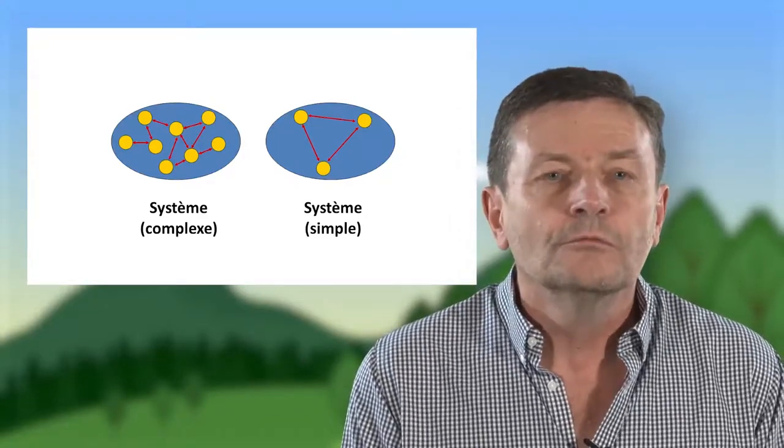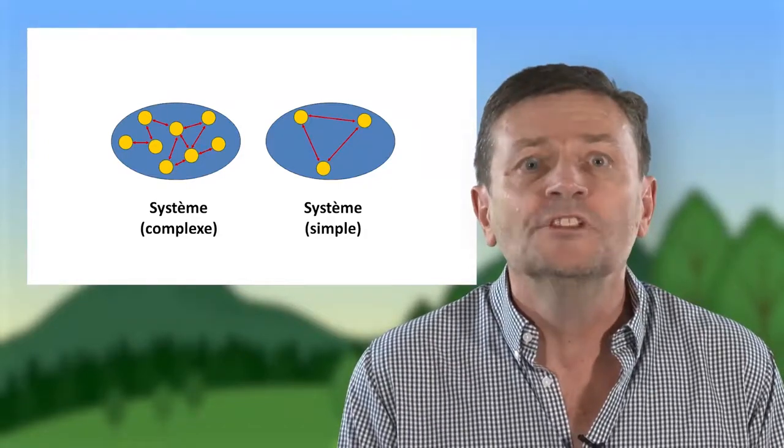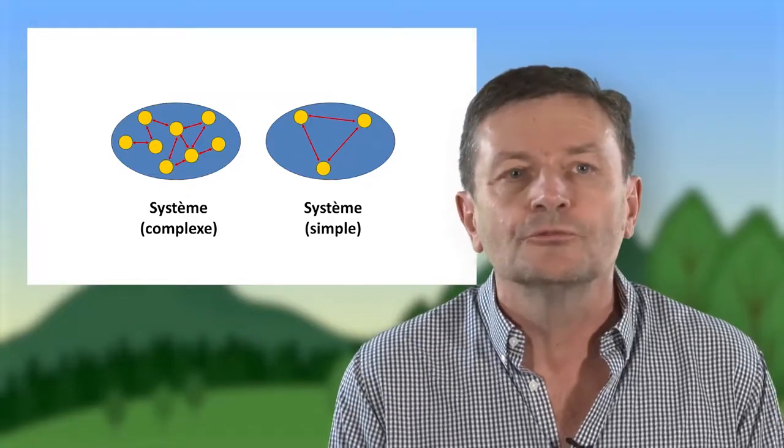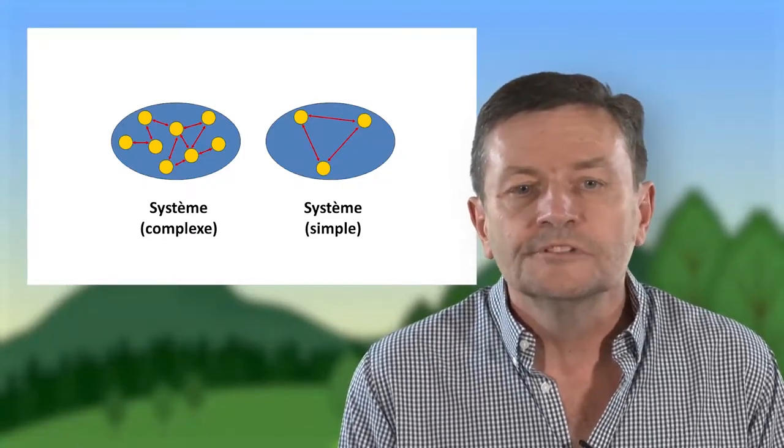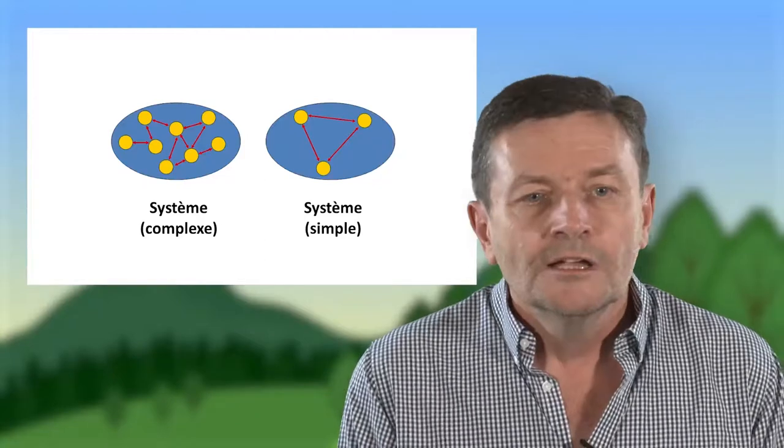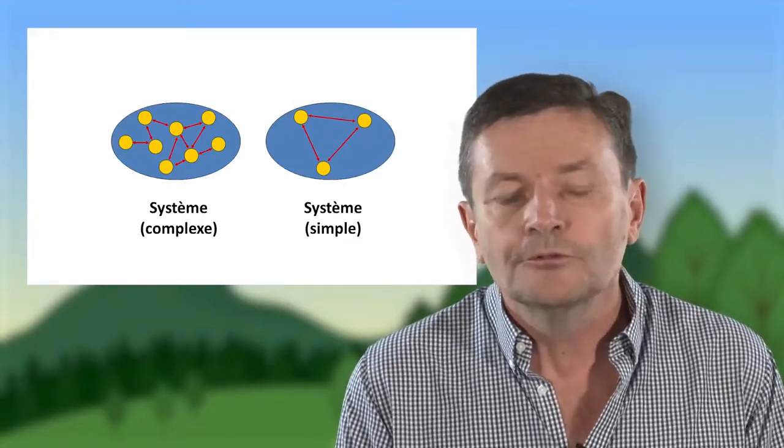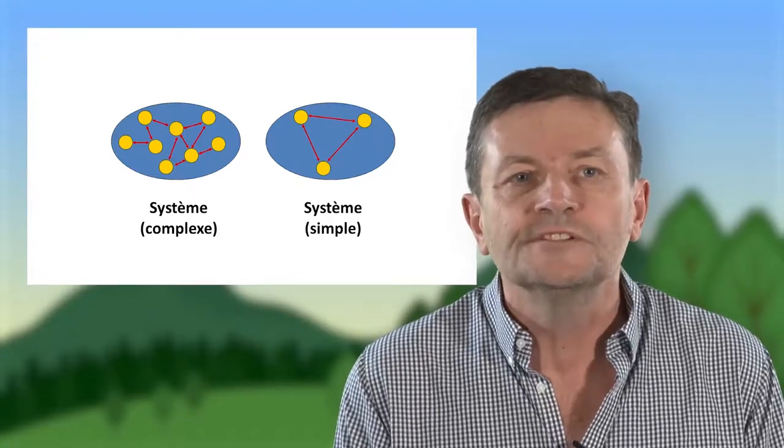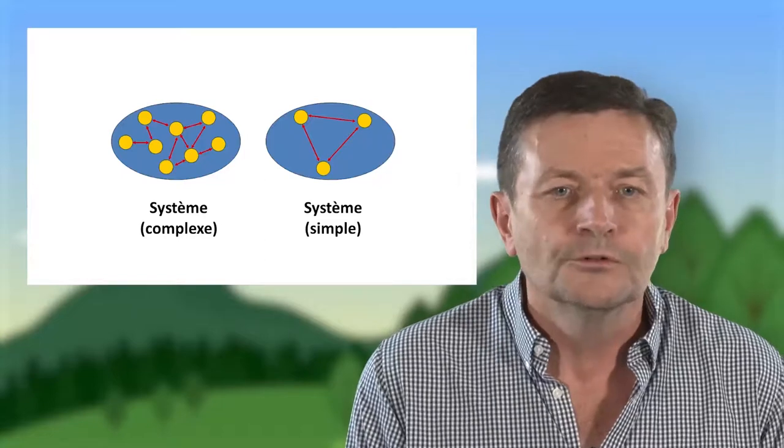Ce qui veut dire que lorsque l'on modifie A, on va modifier B, mais puisque B est modifié, il va également à son tour modifier A. Donc on voit la grande difficulté de l'ingénierie écologique, c'est que lorsqu'on va intervenir sur un élément du système, celui que l'on vise, en fait on va changer la totalité du système et c'est pour ça qu'on peut avoir des effets collatéraux positifs ou négatifs.